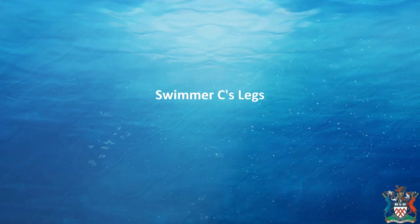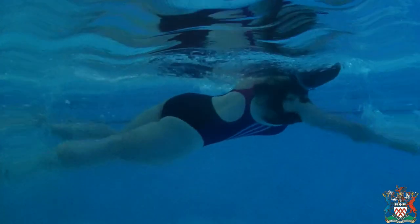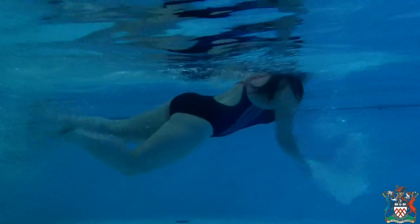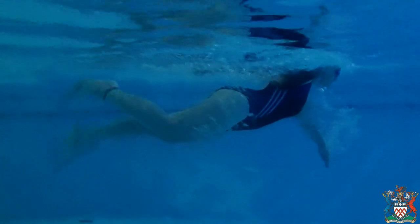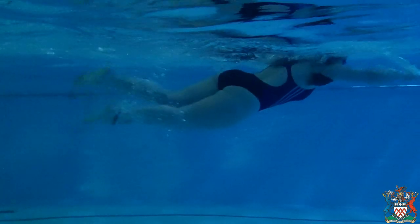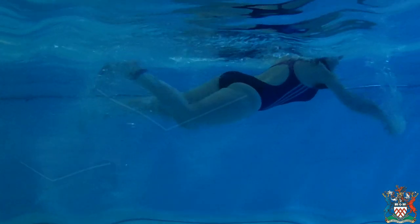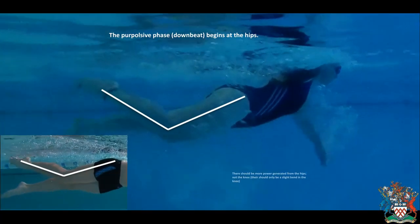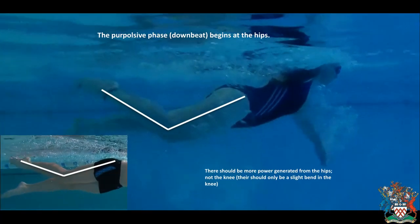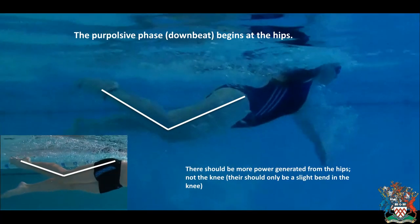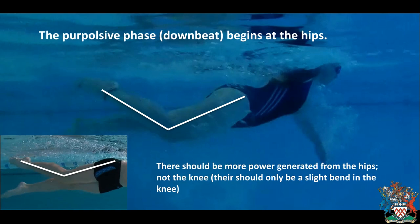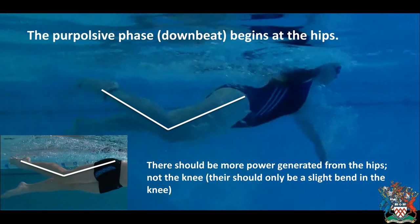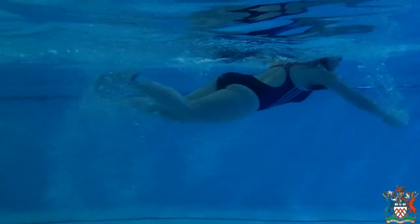Swimmer C's legs. Although swimmer C has a continuous leg kick, the angle at her knee shows excessive knee flexion. Cowen (2002) states that kicking from your hips creates more power, propulsion and balance in the water. This insufficient kick doesn't allow the swimmer to create enough propulsion to stay on top of the water and in a streamlined position, therefore decreasing their speed and increasing eddy resistance.